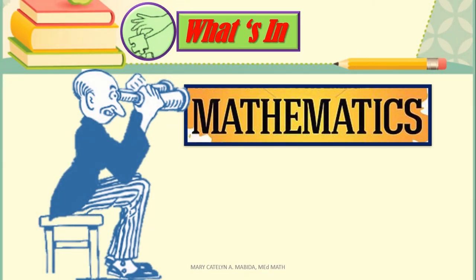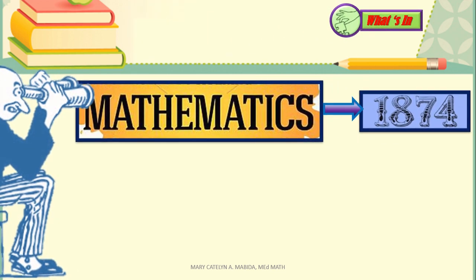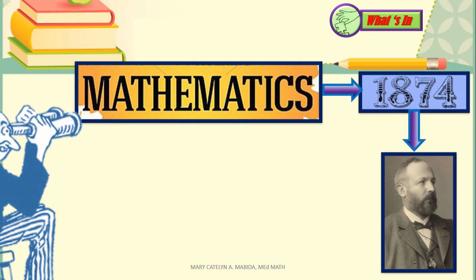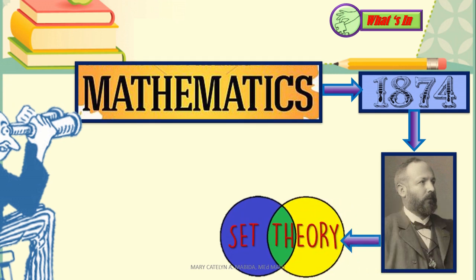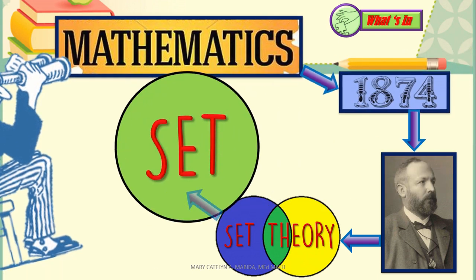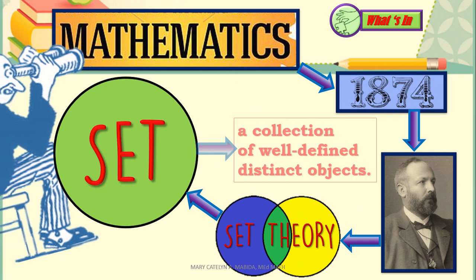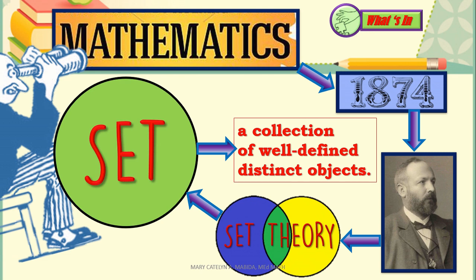Let us take a glimpse at mathematics in 1874. A German mathematician named Georg Cantor founded another body of knowledge called set theory. In this new body of knowledge, Georg Cantor defines a set as a collection of well-defined distinct objects.